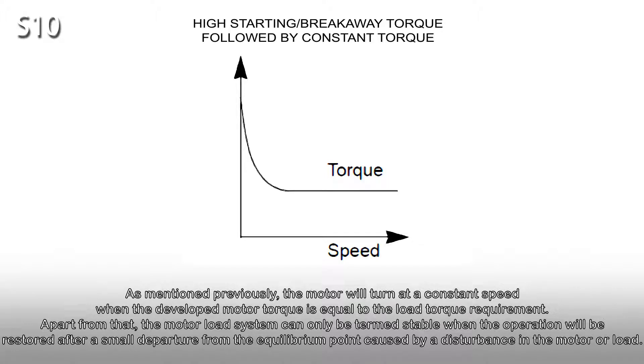As mentioned previously, the motor will turn at a constant speed when the developed motor torque is equal to the load torque requirement. Apart from that, the motor load system can only be termed stable when the operation will be restored after a small departure from the equilibrium point caused by a disturbance in the motor or load.